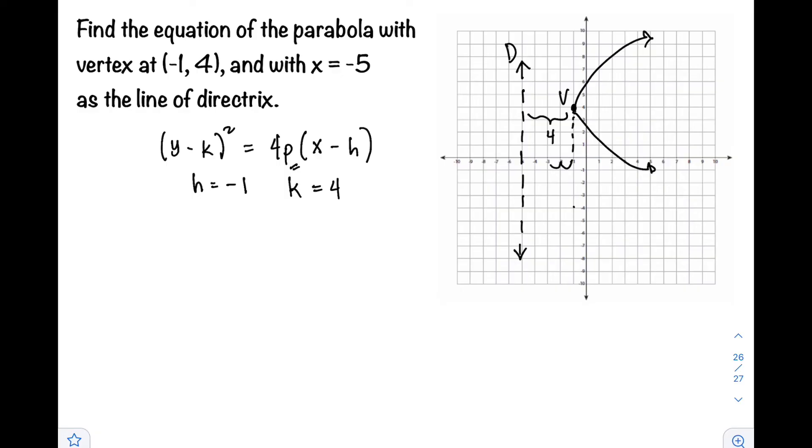We have 1, 2, 3, 4 units. So the value of p is positive 4. Since the parabola opens to the right, p is positive.